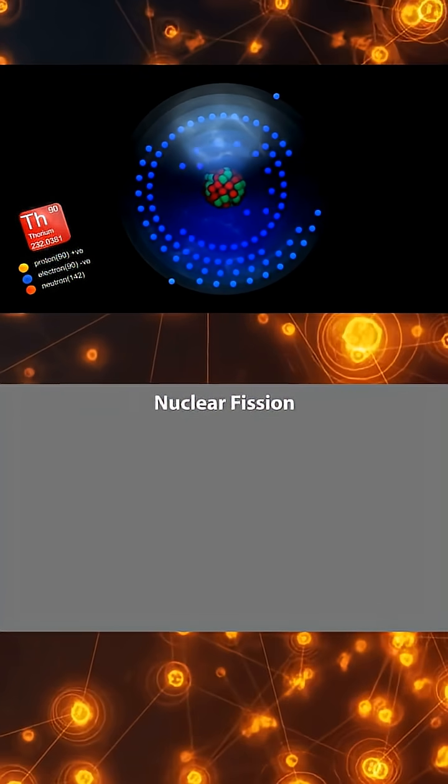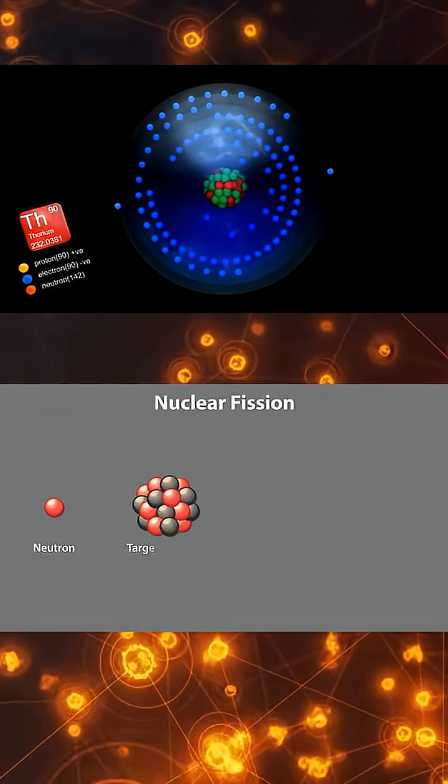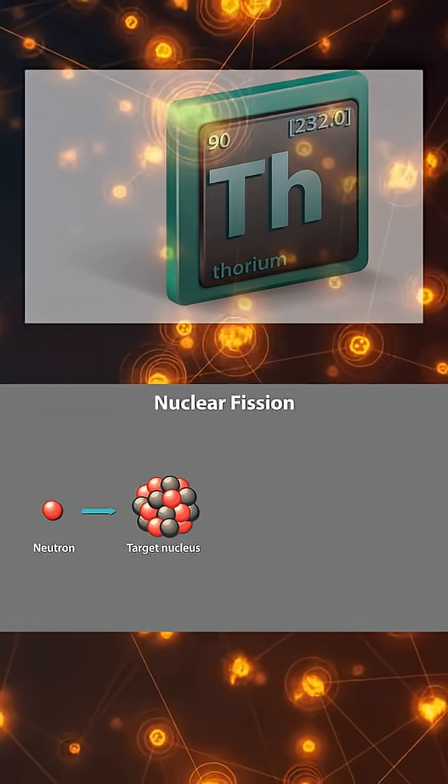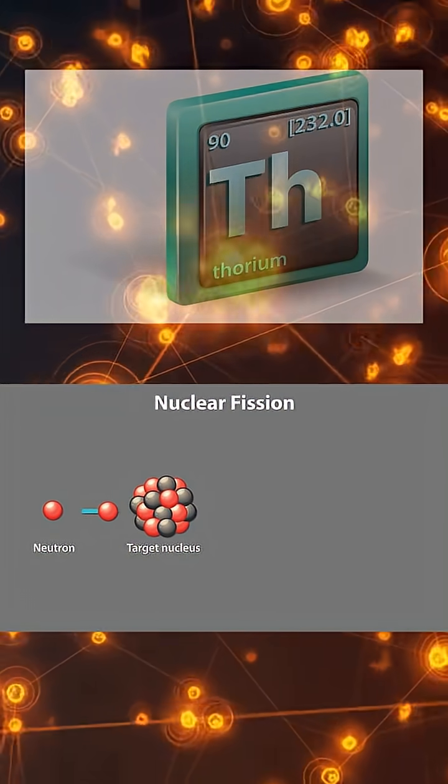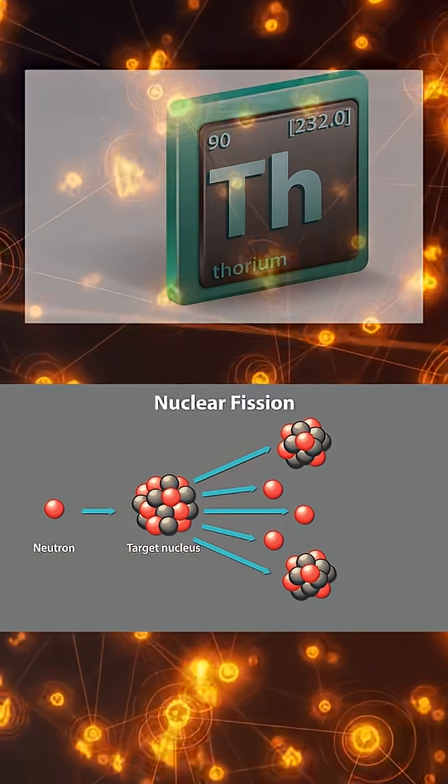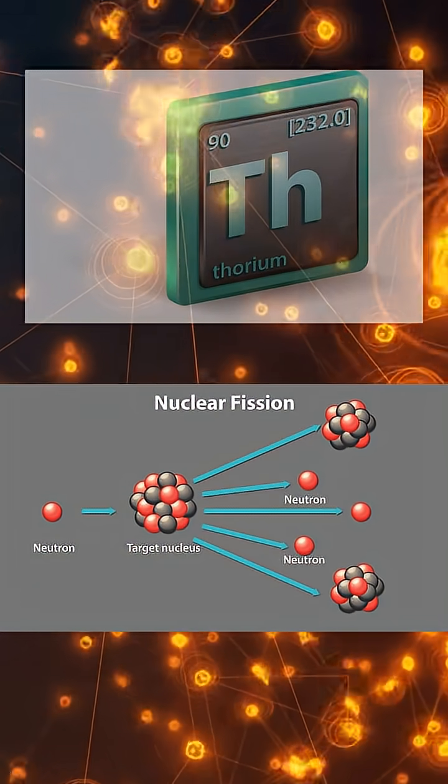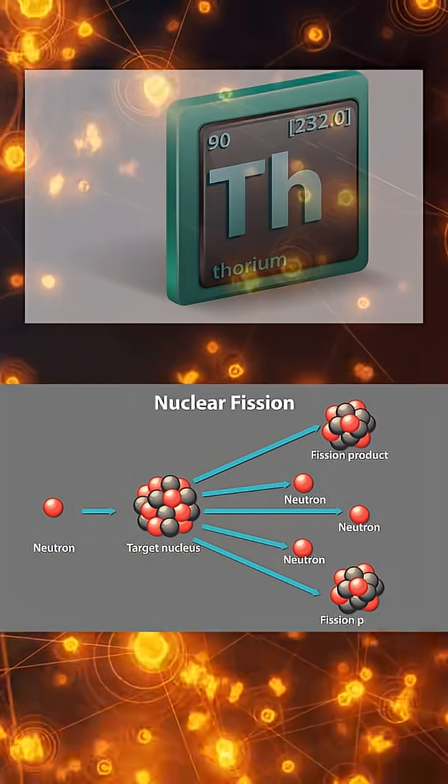Thorium itself cannot undergo nuclear fission. Instead, thorium-232 is what physicists call a fertile material. When it absorbs a neutron, it slowly transforms through radioactive decay into uranium-233, a fissile isotope capable of sustaining a nuclear chain reaction. This process is called breeding and it is the core idea behind thorium reactors.